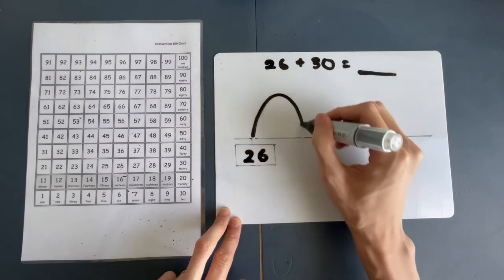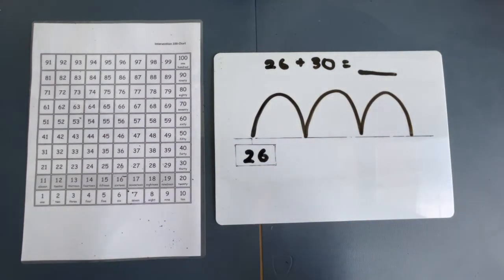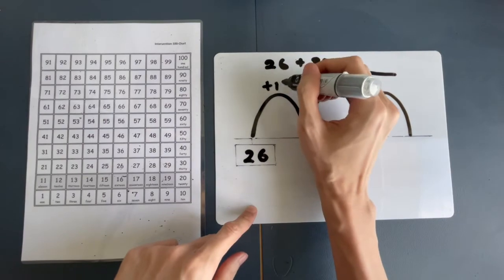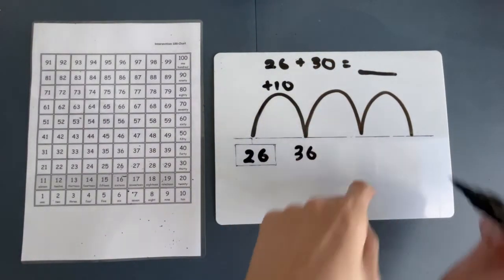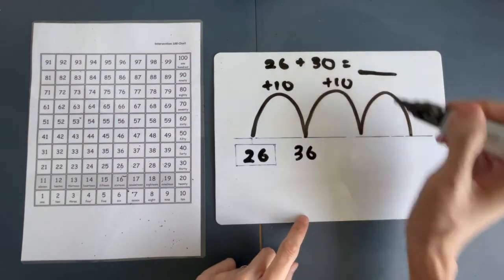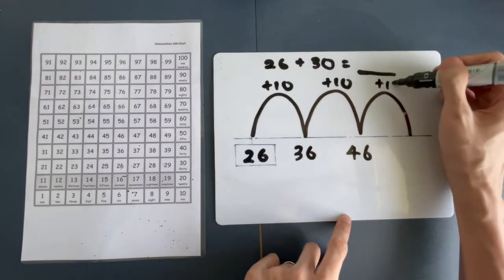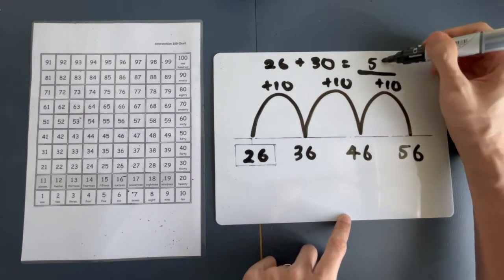Start from here. 1 jump. 2 jump. 3 jumps. And we are done. Let's fill in the numbers. From 26, 10 more gives me 36. 10 more gives me 46. And then, 10 more gives me 56. So, the answer is 56.